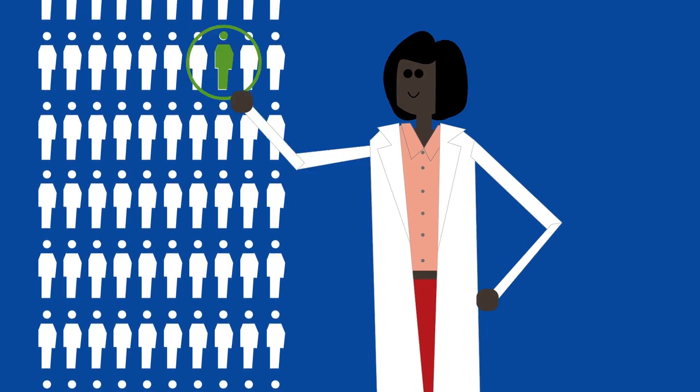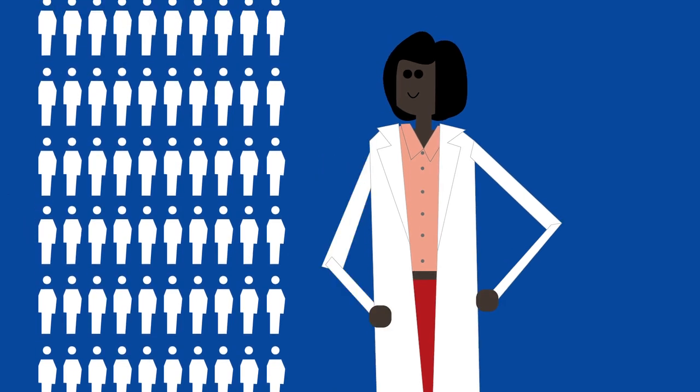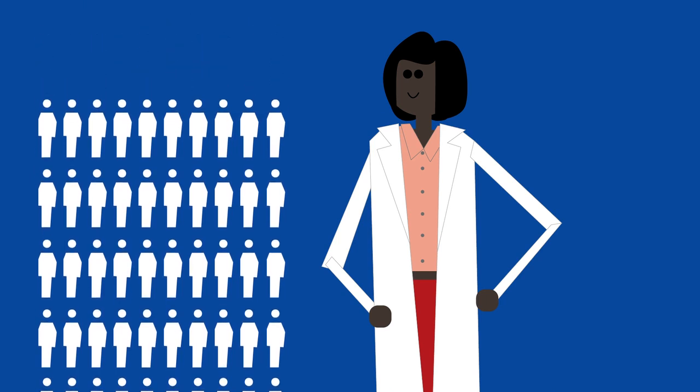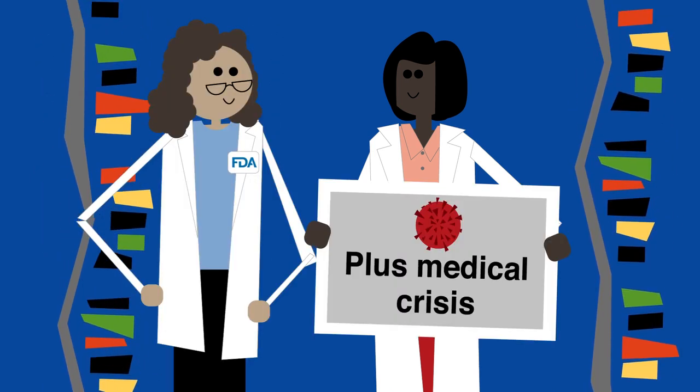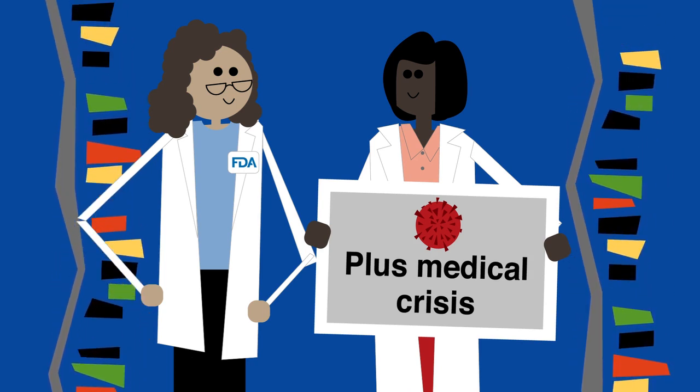including counting the number of people who got COVID-19 and evaluating how sick they got. If a vaccine proves safe and effective during clinical trials, and there's a medical crisis, such as the COVID-19 pandemic,